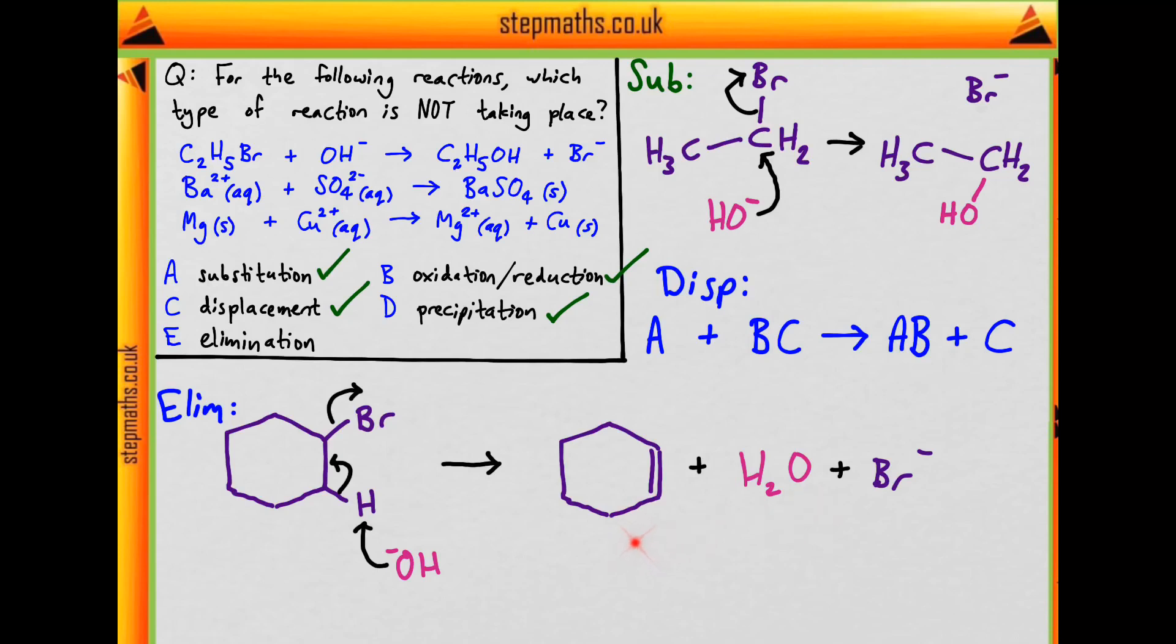And we can see that we only have one organic reaction. That's the first one. We know that this isn't elimination, it is substitution. So this one is not taking place. So our final answer is that reaction E, elimination, is not taking place.